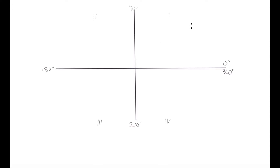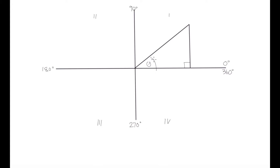Here we have quadrant 1. Let's say we have a coordinate somewhere in this quadrant and we're constructing a right-angle triangle by drawing a line from our origin to that coordinate. This line makes up our hypotenuse. We can draw a line down from the coordinate point to the x-axis to complete our right triangle. We have our hypotenuse, our right angle, and this is our theta of interest. Now let's define sine, cosine, and tangent for this theta.